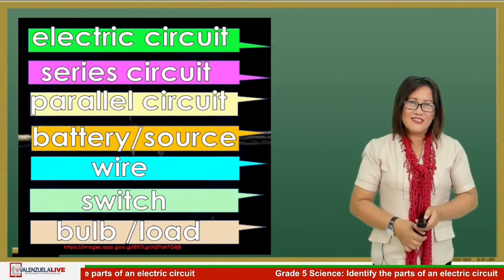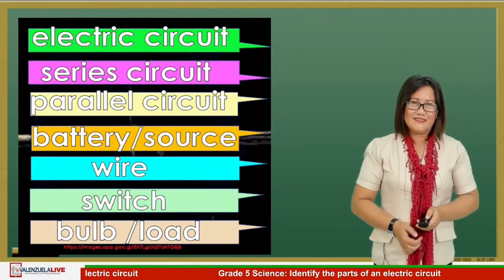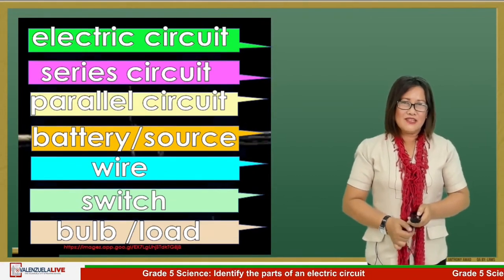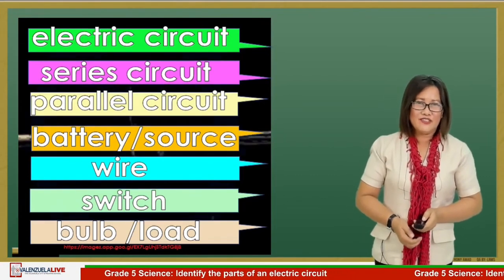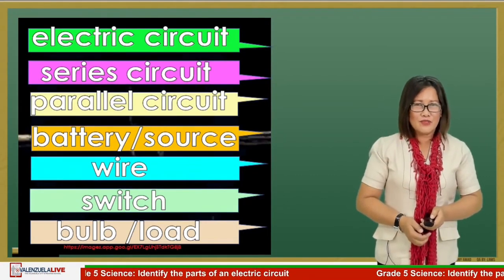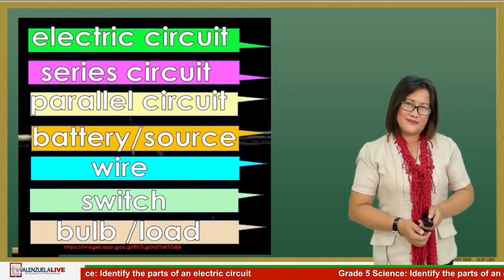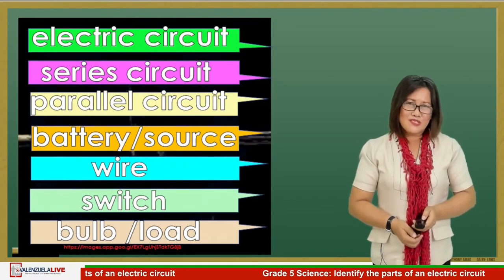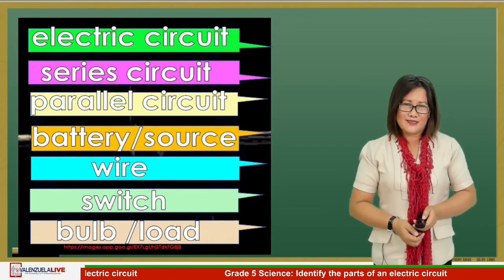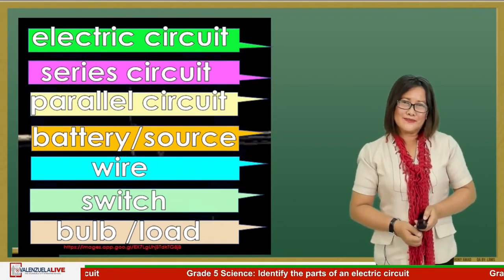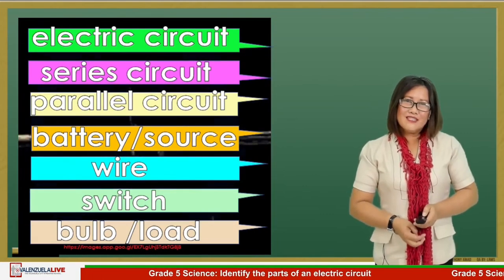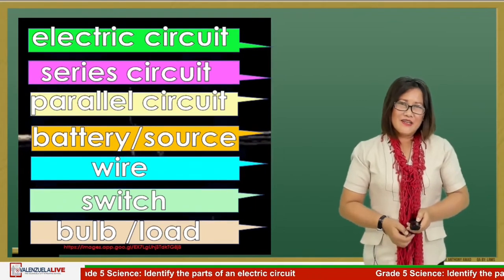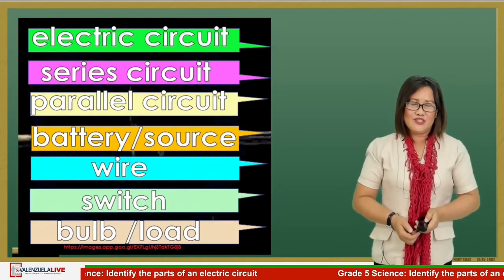There are two types of circuits: series and parallel. Bulbs that are connected one after the other in one chain is an example of a series circuit. On the other hand, bulbs with different loops is a parallel circuit. But what we are going to tackle this morning are the parts of an electric circuit.